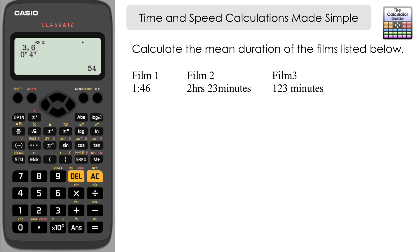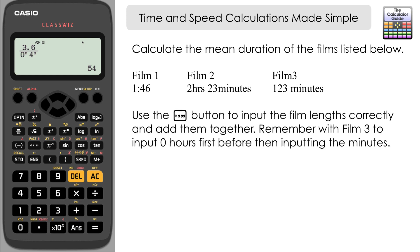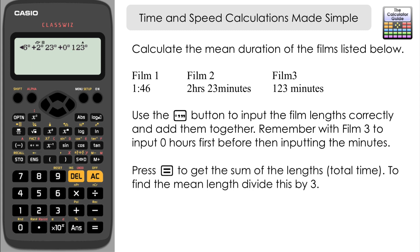The last thing covered in this video is we're going to find the mean length of three films. We've got three films here with the length of three films, and we're going to work out the mean duration of these movies. So film one is 1 hour 46 minutes long—it's 1 hour 46 minutes—plus film two is 2 hours and 23 minutes, plus the last film here that's just given in minutes. In fact, that's quite a common way to give a film length, is just in minutes. So it's 123 minutes. Remember how we put this in: 0 hours, 123 minutes, and press equals.